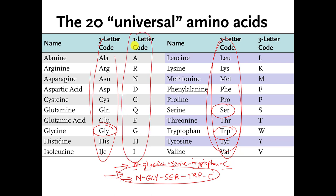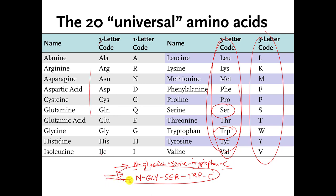Even three-letter abbreviations can get tedious, so people have come up with one-letter abbreviations for all the amino acids. For the same molecule: glycine's one-letter abbreviation is G, serine is S, and tryptophan is W — because T got used somewhere else. With one-letter abbreviations, you don't write the N and C on either end, because N and C are being used as one-letter abbreviations themselves. The convention is that you always write the N-terminus end on the left and the C-terminus end on the right.